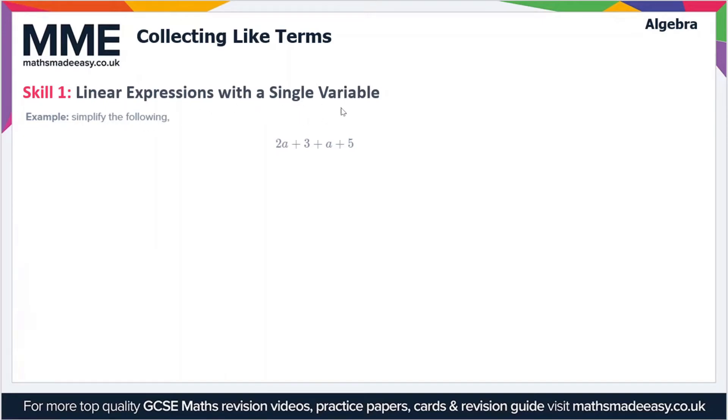So the most simple type of expression you'll ever come across is a linear expression with a single variable. So in this case we have to simplify 2a plus 3 plus a plus 5. Now what we're going to do here is collect the like terms. So what are the like terms? Well, we have two terms in a, that's 2a and a, and we have two terms which are just single numbers, so that's the 3 and the 5.